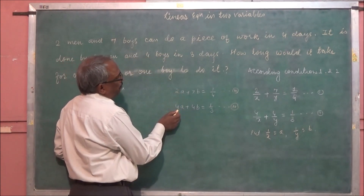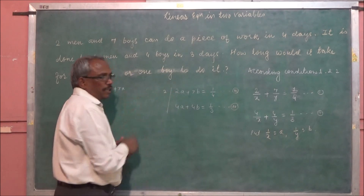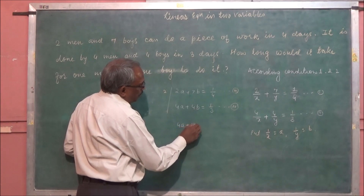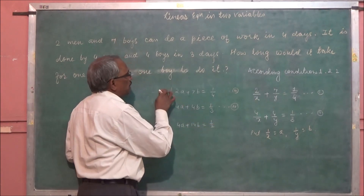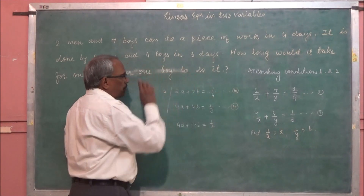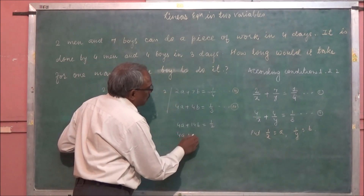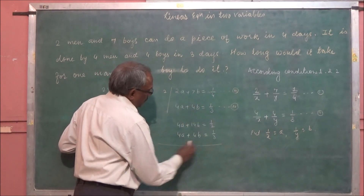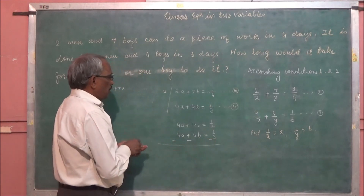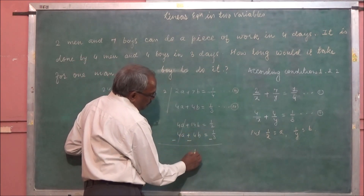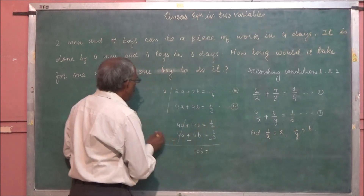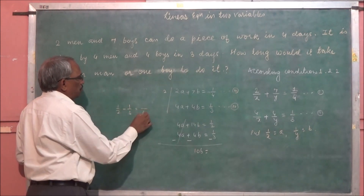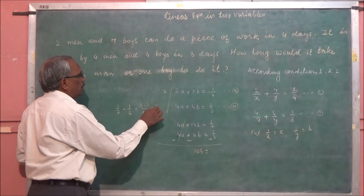To eliminate a, multiply equation 3 by 2: 4a + 14b = 1/2. Subtract equation 4 from this: (4a + 14b) − (4a + 4b) = 1/2 − 1/3. The a terms cancel, giving 10b = 3/6 − 2/6 = 1/6, so b = 1/60.